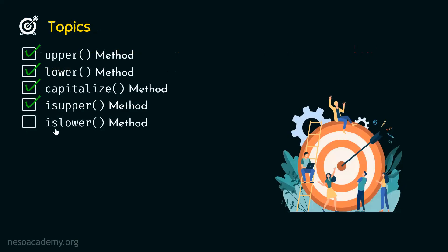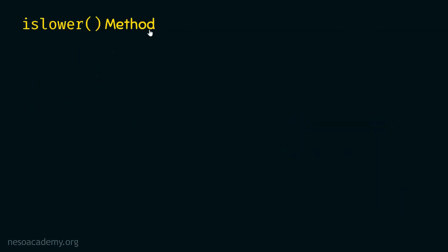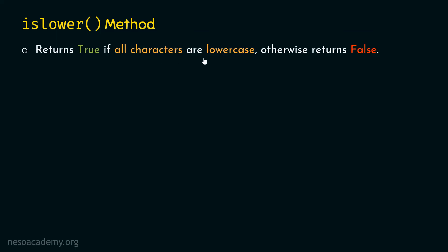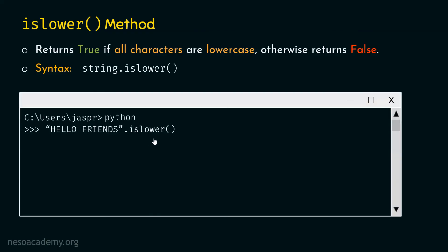Now let's move to the islower method. Islower method returns true if all characters are lowercase; otherwise it returns false. It is the opposite of isupper method. Let's type: 'HELLO, FRIENDS'.islower() — all characters are uppercase here, so if we hit enter, we get false, because islower returns true only when all characters are lowercase.